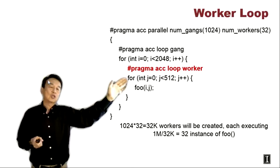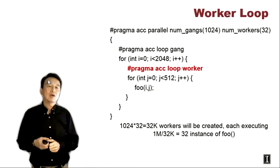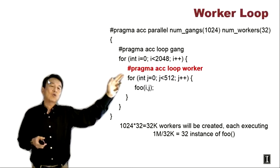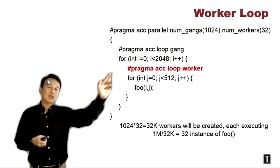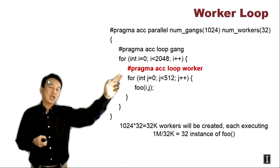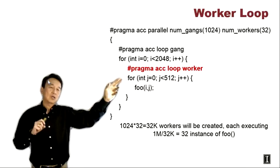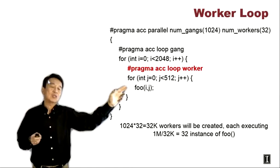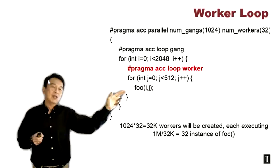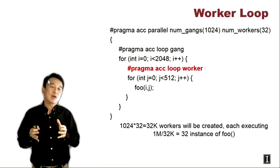We can further extend this concept to the worker level. Within the outer loop, we have an inner loop declared as an OpenACC worker loop using ACC loop worker. All inner loop iterations will be further divided by the workers in a gang. We distribute two outer loop iterations to each gang, and within each gang, those two iterations combine with 512 inner loop iterations to generate 1,024 equivalent inner iterations, which are divided by the 32 workers. So each worker ends up executing 32 iterations of the inner loop.